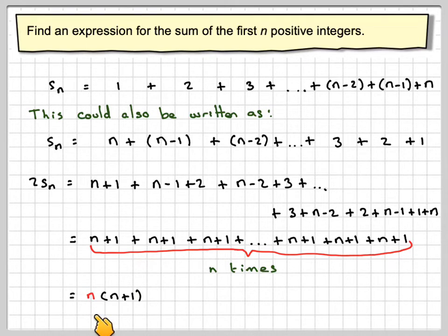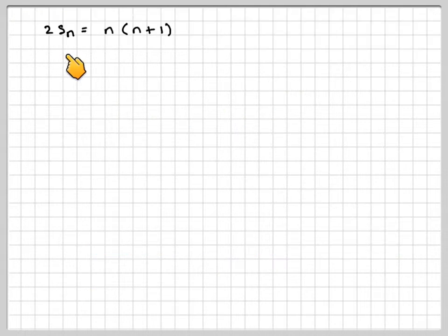So this will become n times n plus 1, and therefore 2Sn is n times n plus 1. But we just wanted to sum one time only, so we'll have to divide by 2 or multiply by a half.